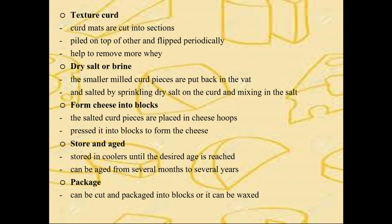For cheddar cheese, the smaller curd pieces are put back in the vat and salted by sprinkling dry salt, and the curds are mixed in the salt. Then, the salted curd pieces are placed in cheese hoops and pressed into blocks to form the cheese. The cheese is stored in a cooler until the desired age is reached. Cheese can be cut and packed into blocks or it can be waxed.